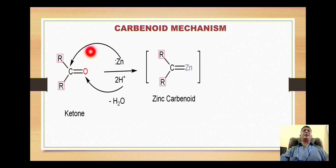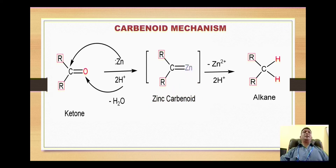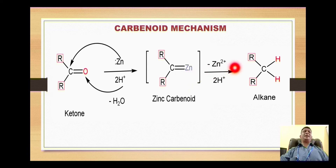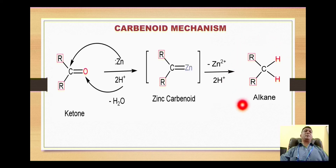Thus we have a double bond between the carbon and zinc, giving us an intermediate called the zinc-carbenoid. This zinc-carbenoid on further reaction with acid gives out the zinc cation, and the double bond is broken down, which then reacts with two protons to give formation of the alkane.